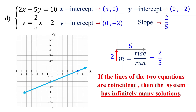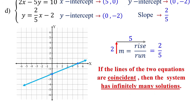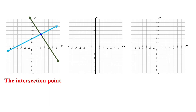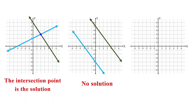This means that any point on the lines satisfies both equations. In conclusion, when solving a system of equations graphically, first graph each equation on the same coordinate plane. If the lines intersect, the point of intersection is a solution to the system. If they are parallel, the system has no solution. If they are coincident, the system has infinitely many solutions.